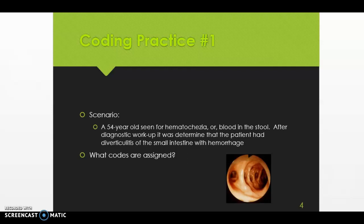Let's do some practice. This first scenario, we have a patient who's a 54-year-old seen for hematochezia or blood in the stool. After diagnostic workup it was determined that the patient had diverticulitis of the small intestine with hemorrhage. So what code or codes are we going to assign for this patient? Let's work this one together. Open up your ICD-10 CM coding manual to the front to the alphabetical index and go to D to diverticulitis.